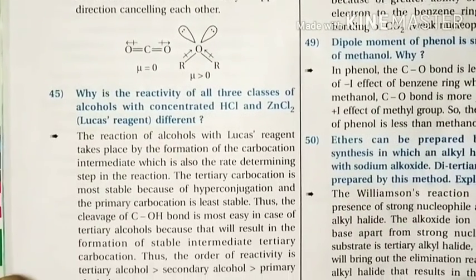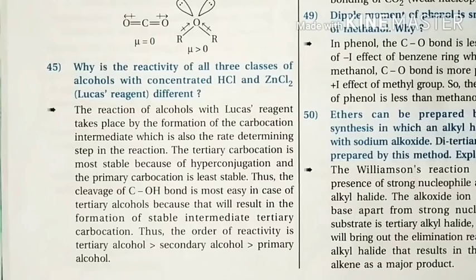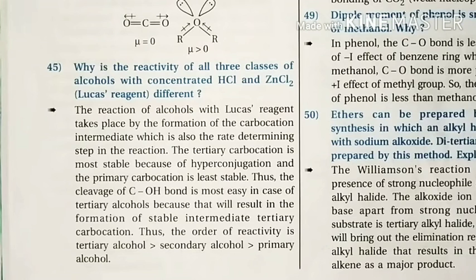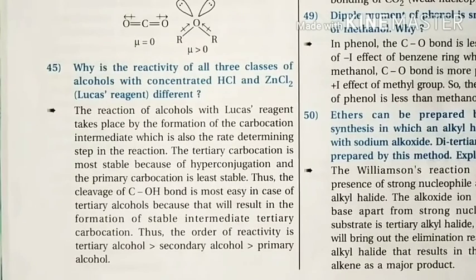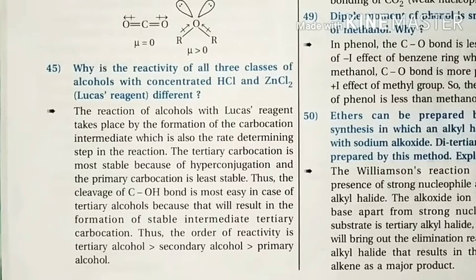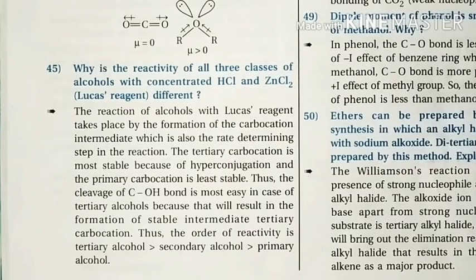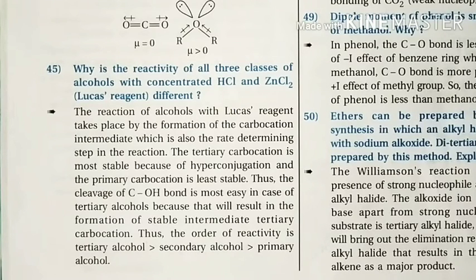Question 45: Why is the reactivity of all classes of alcohols with Lucas reagent (concentrated HCl and ZnCl2) different? The reaction occurs through carbocation intermediate formation. More stable the carbocation, more reactive is the alcohol. Carbocation stability follows: tertiary > secondary > primary. Therefore, reactivity follows the same order. For tertiary alcohols, oily drops appear almost instantly; for secondary, the solution turns milky after 2-3 minutes; for primary, there is no change.